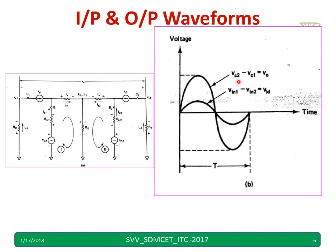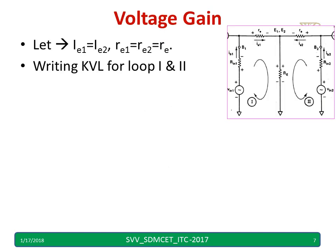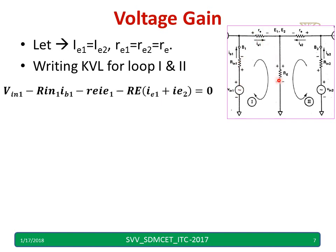The output voltage V0 is equal to VC2 minus VC1. VID is VIN1 minus VIN2. V0 is the amplified version of the difference voltage VID. We consider RE1 equal to RE2 equal to RE for simplification. Considering loop 1, we have VIN1, RIN1, IE1, RE in that loop.